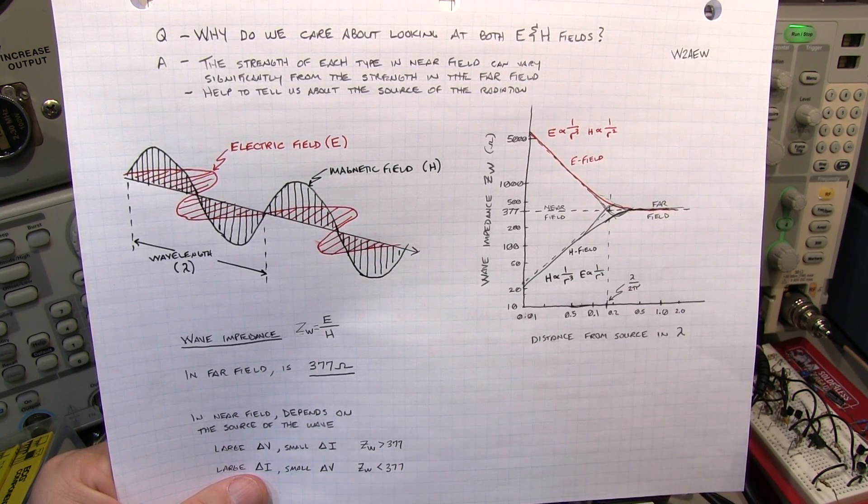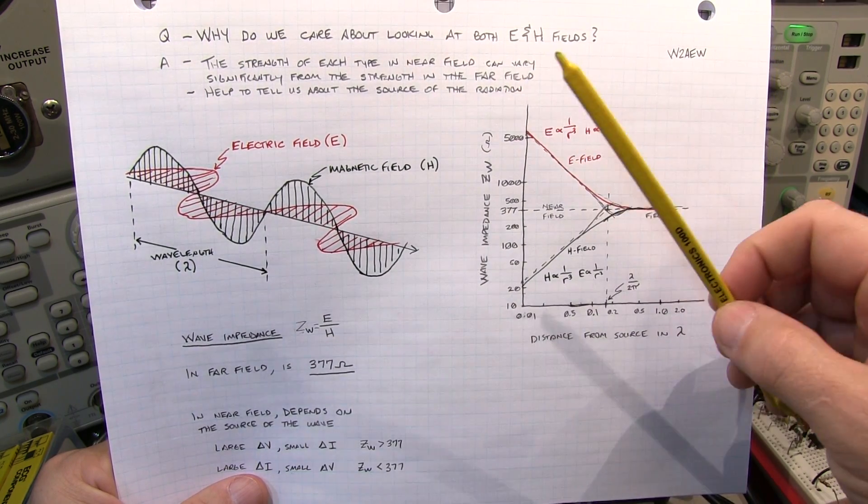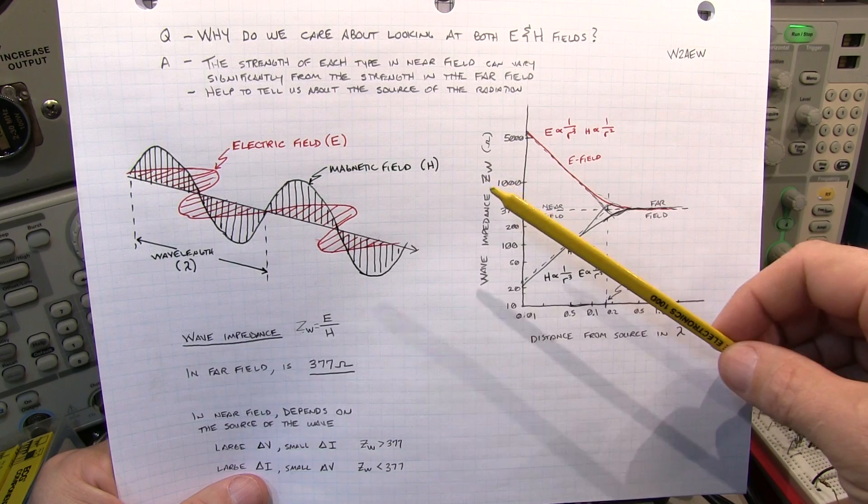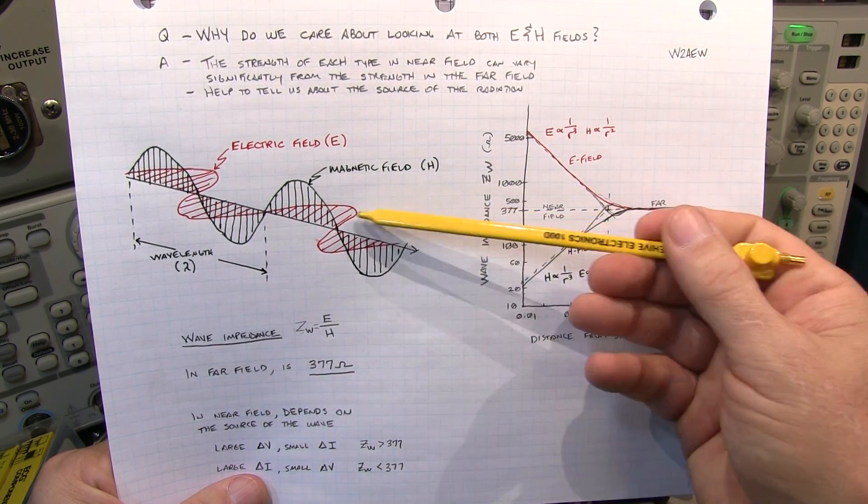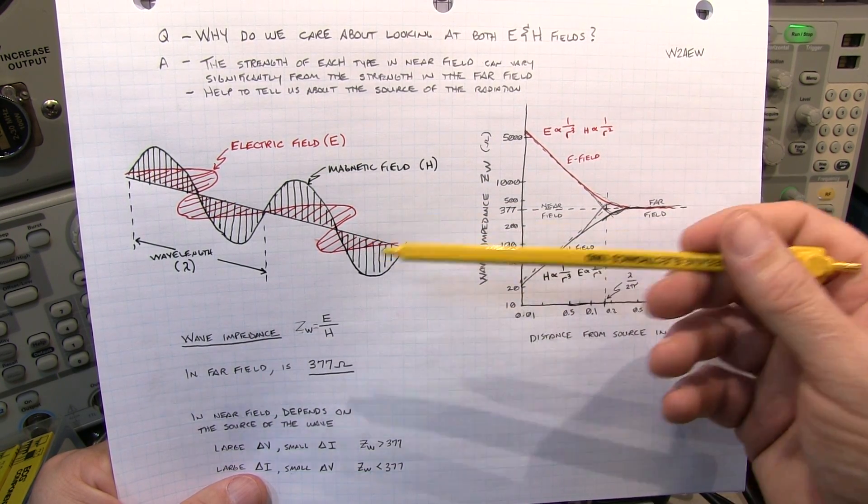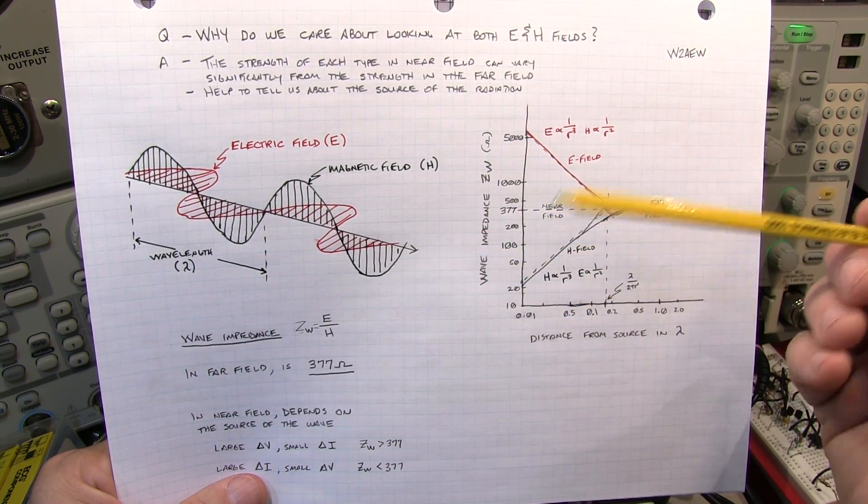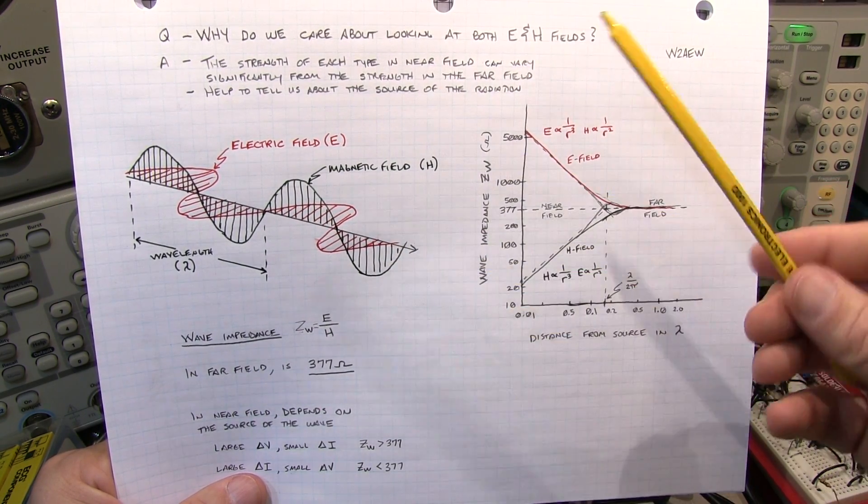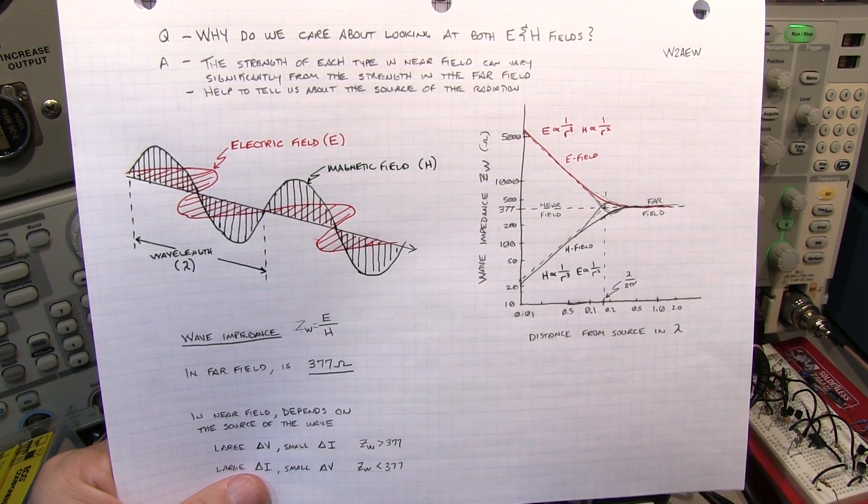Now, it's often a good idea to search with both E field and H field probes in the near field, especially if you don't know the source of the emission. If you had a high speed current in a power supply line that was creating a strong magnetic field, if you had only searched around with an E field probe, you wouldn't have seen that. And there's other situations like that as well. So it's always a good idea to use both if you're searching for the source of an offending emission.